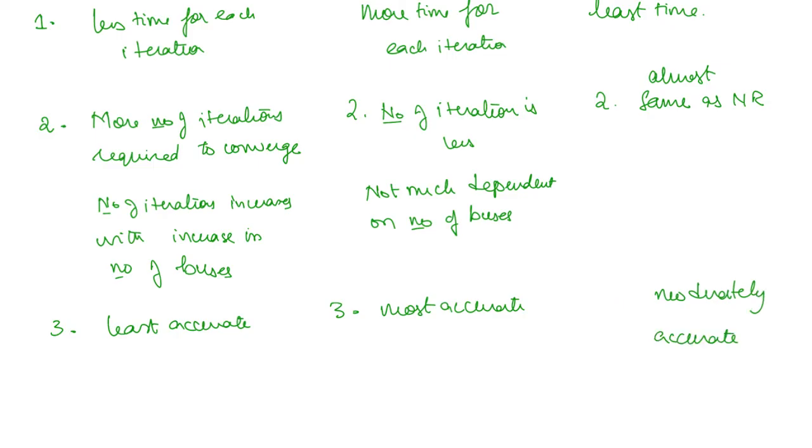The fourth point is in the Gauss-Seidel method, the selection of slack bus plays a role in the convergence. Slack bus selection affects convergence. Sometimes it may diverge if the slack bus is not chosen suitably. Here it is not going to make much difference in the Newton-Raphson method.